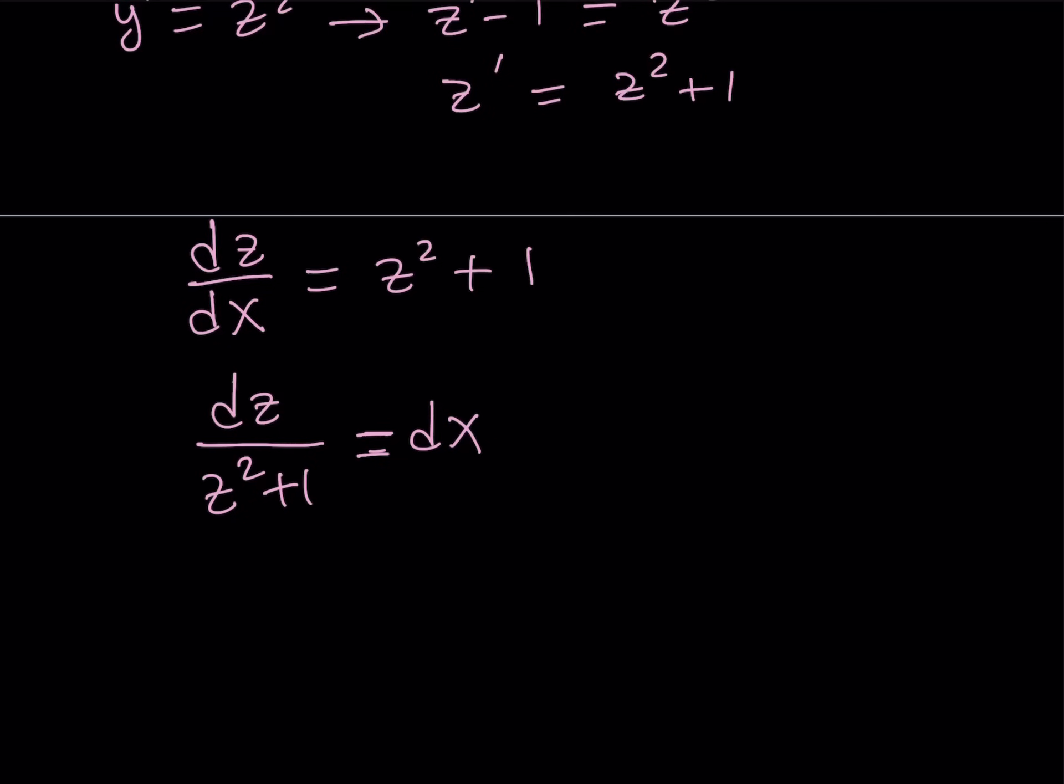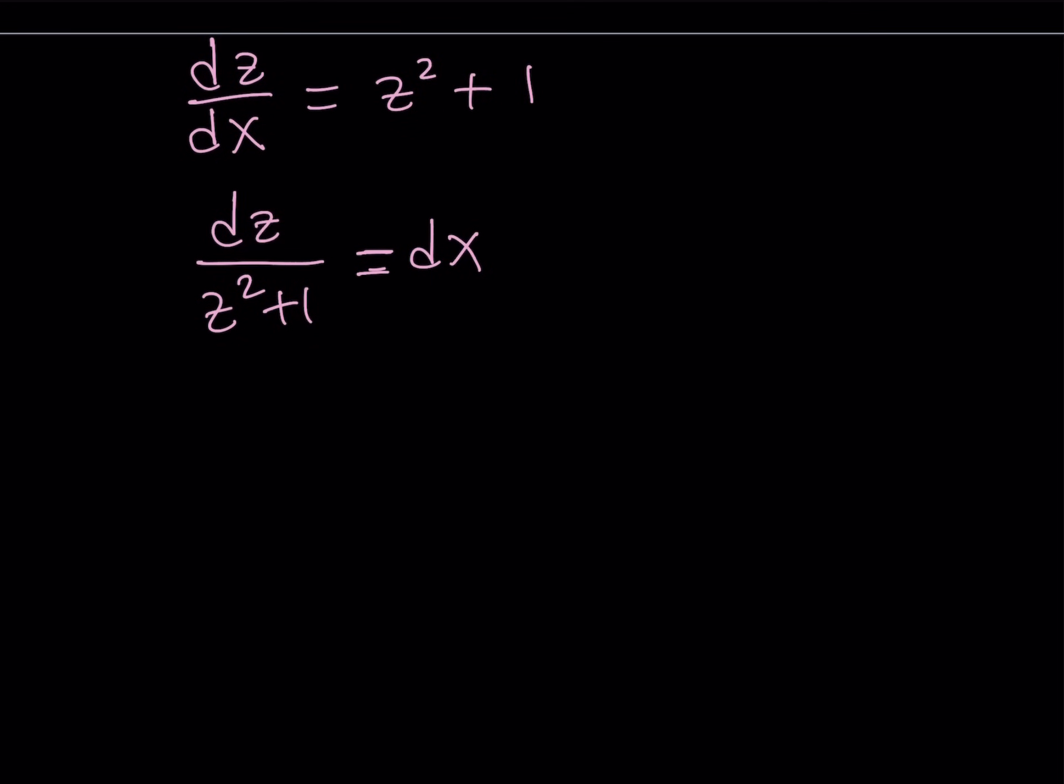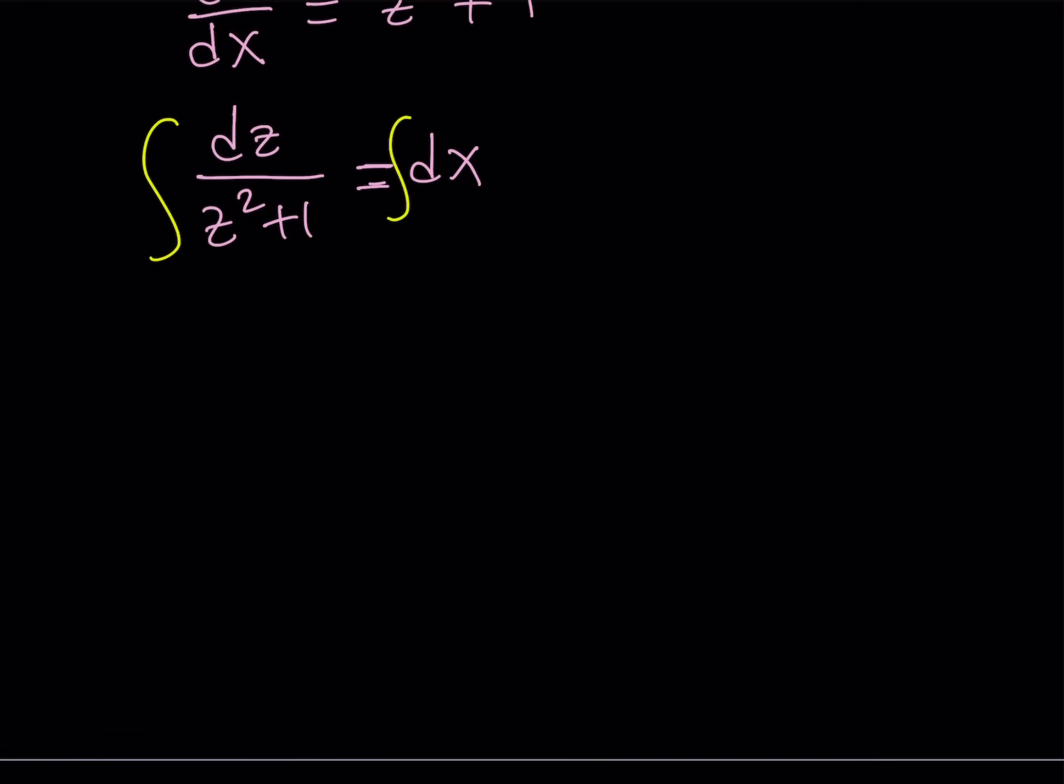So at this point, you want to integrate both sides because we have d something equals d something else, and we want to find what those functions are. So let's go ahead and integrate both sides. Even though, I shouldn't say with respect to x, because left-hand side we're going to integrate with respect to z, but z is a function of x, so we're going to eventually turn it into x.